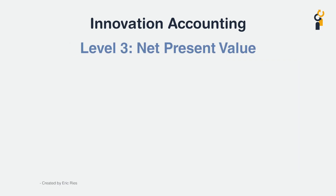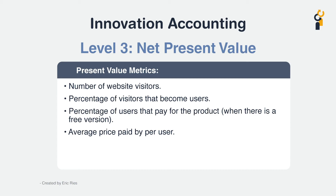At the third level, we look at what the product in development is worth right now. Your business plan may aim for the product to be worth a specific amount in a certain amount of time, but the Net Present Value is meant to tell you what it's worth now. Unlike conventional Net Present Value calculations, which include assumptions around market size, market share, product costs, and so on, the Innovation Accounting Net Present Value is based on long-term drivers of your product's future performance. The purpose of this third level is to create a focus on the product's financial performance.